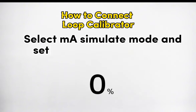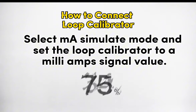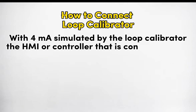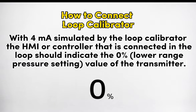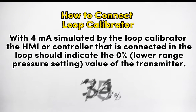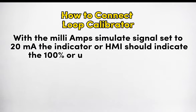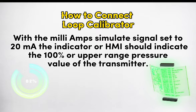Select milliamp simulate mode and set the loop calibrator to a milliamp signal value. With 4 mA simulated by the loop calibrator, the HMI or controller connected in the loop should indicate the 0% lower range pressure value of the transmitter. With the simulate signal set to 20 mA, the indicator or HMI should indicate the 100% upper range pressure value of the transmitter.